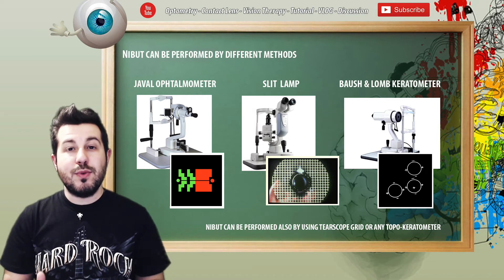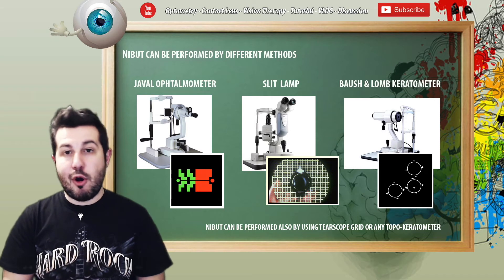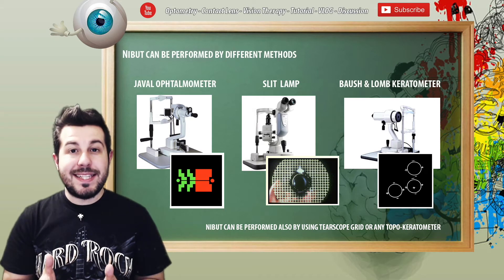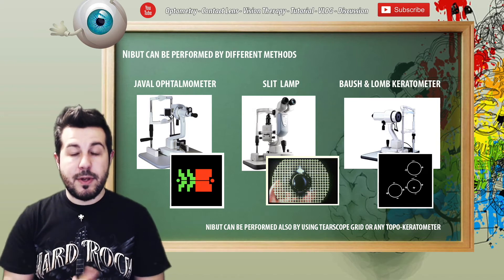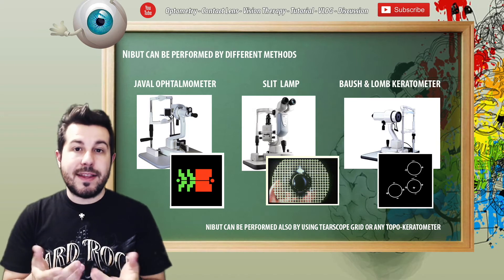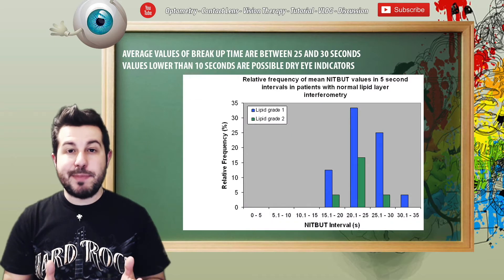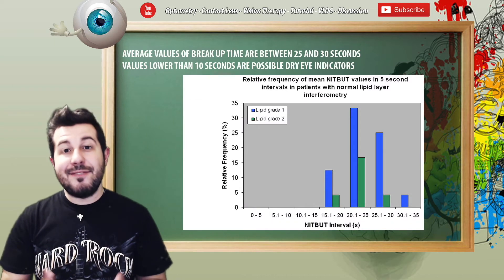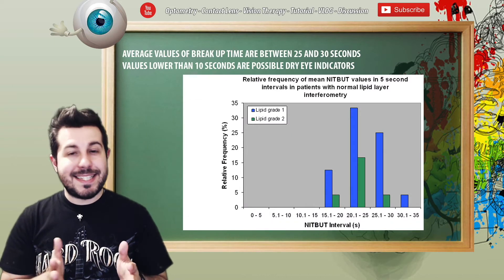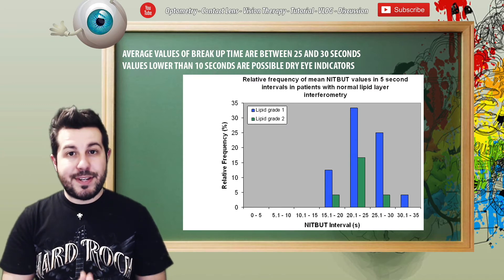All we have to do is project images on the tear film of our patient and calculate the time between the last blink and image distortion, which is a signal of lipid layer break up. The average time is between 25 and 30 seconds, and values lower than 10 seconds could be an indicator of dry eye.